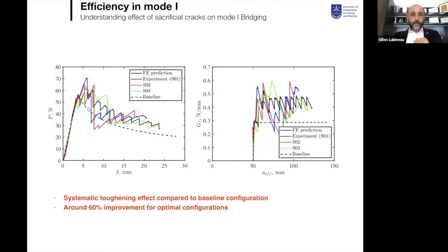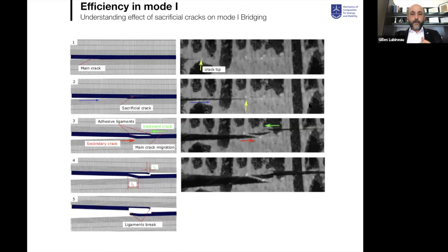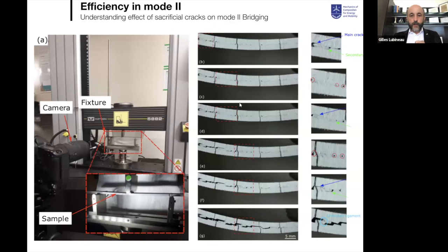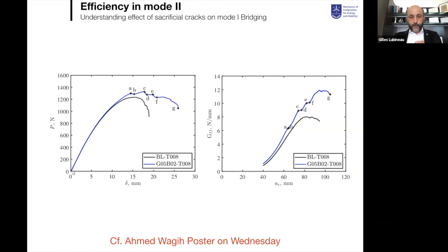Compared to the baseline joint, introducing sacrificial cracks improves toughness by approximately 60% in an optimal configuration. In mode 1, the main crack propagates initially, then approaches the sacrificial crack, promoting creation of a backward secondary crack at the top, failure of a bridging ligament, and final failure at the bottom. Numerical simulation of the mechanism correlates well with experimental observations. This also works very well in mode 2, with the same concept of secondary crack bridging and ligament formation, making the initial system much more progressive and ductile.